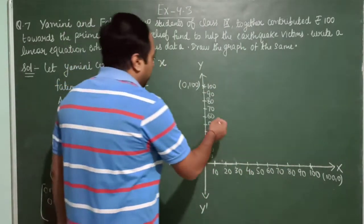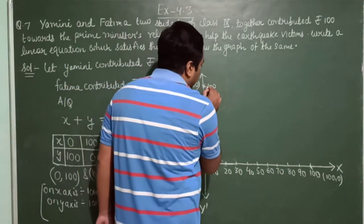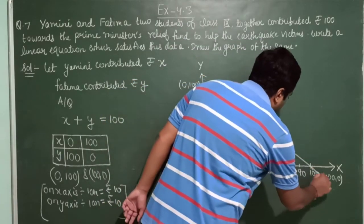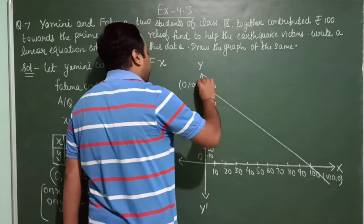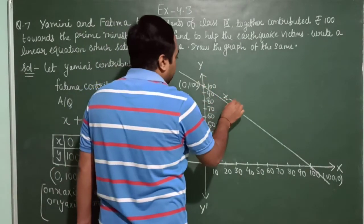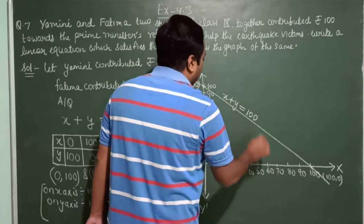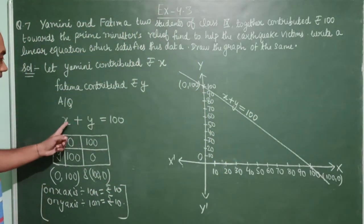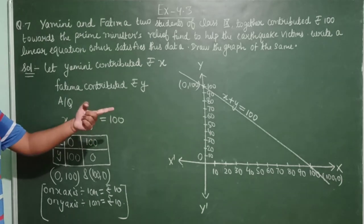Now the next thing is connecting these two points. So this is the graph for the equation x plus y equals 100.